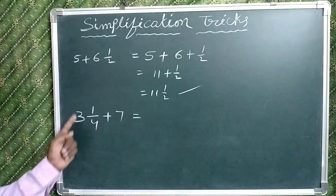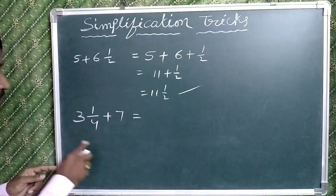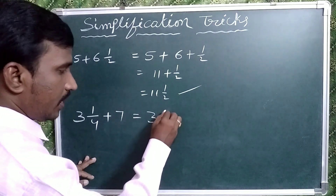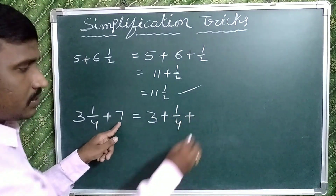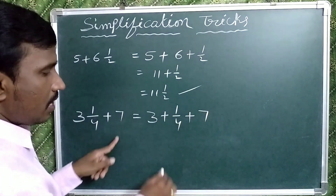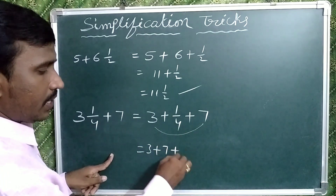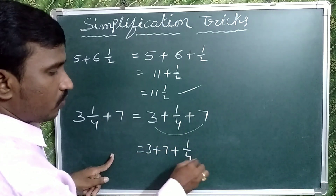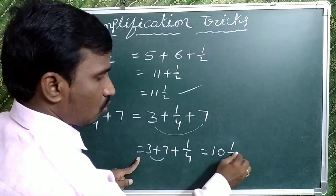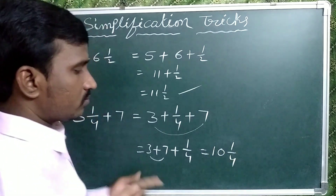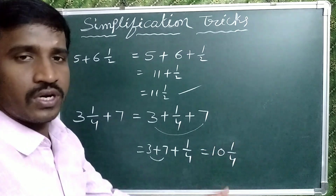Suppose given 3 and 1 by 4 plus 7. This means 3 plus 1 by 4 plus 7. Add the whole numbers: 3 plus 7 plus 1 by 4. 3 plus 7 is 10. So the answer is 10 and 1 by 4.